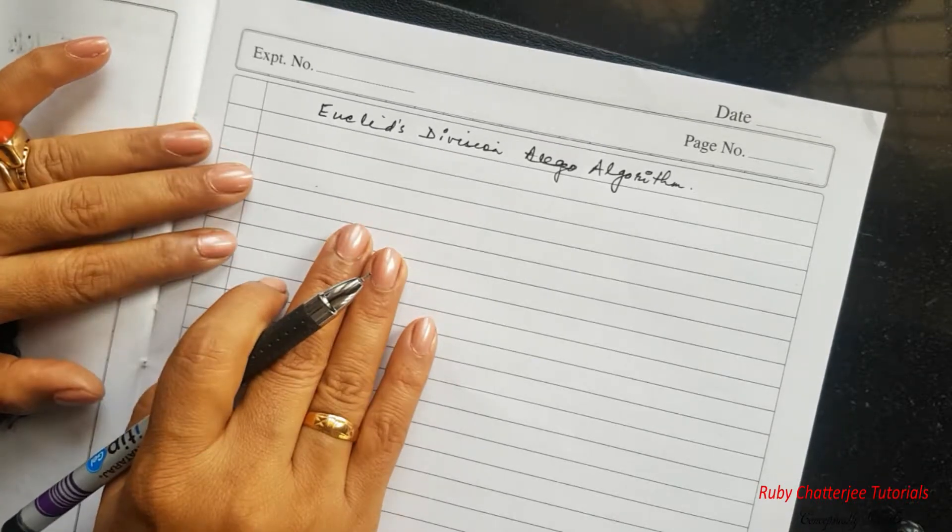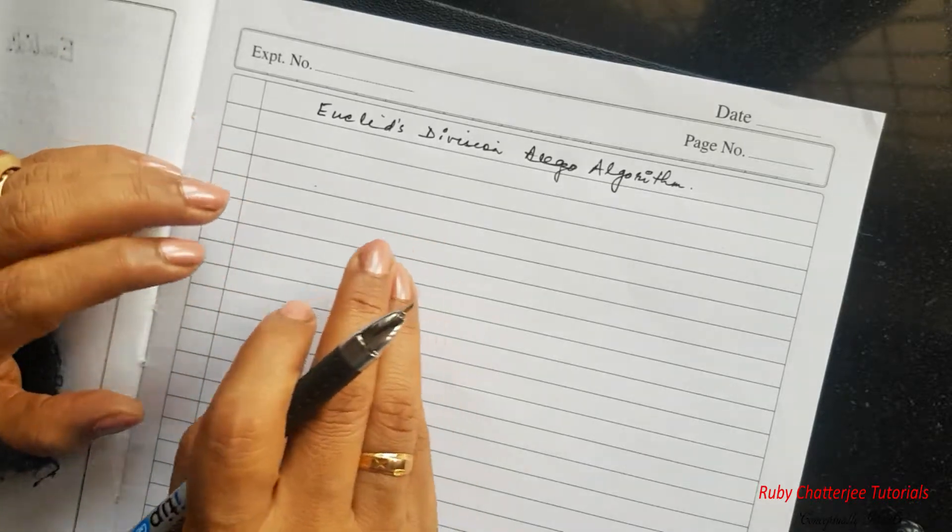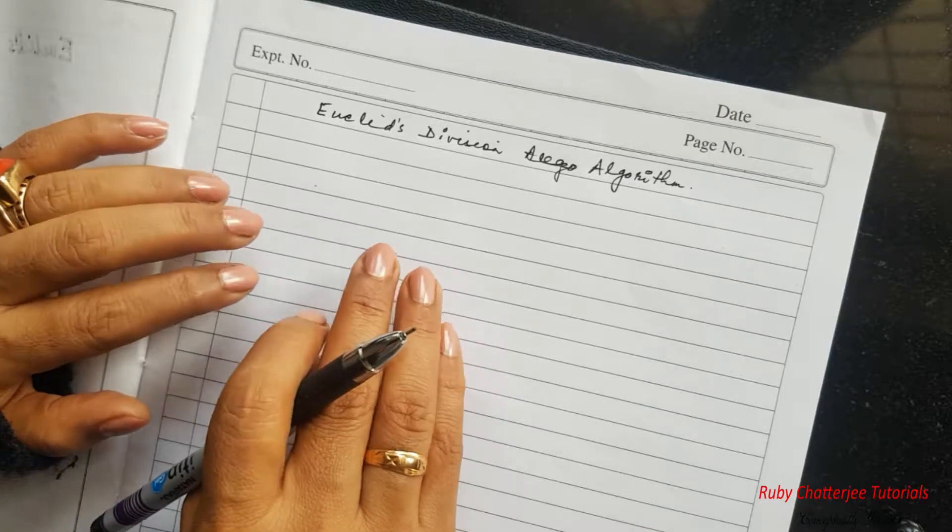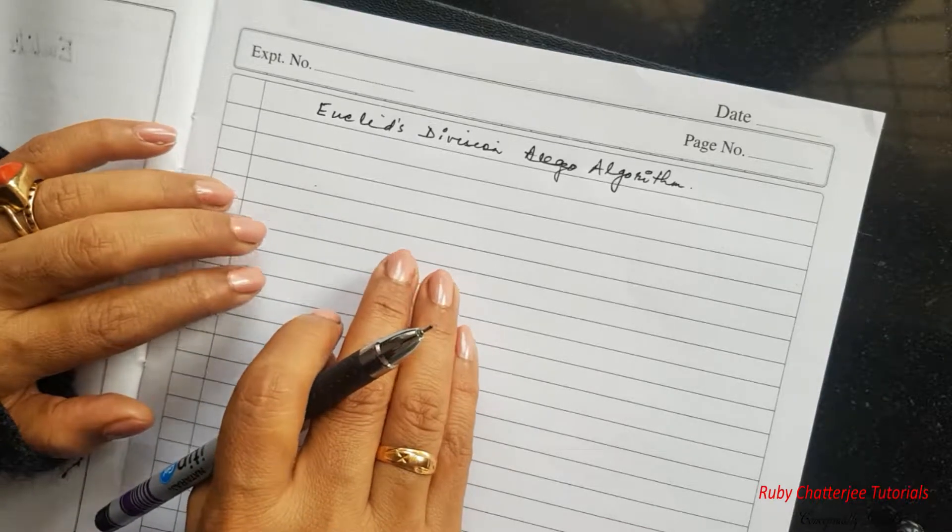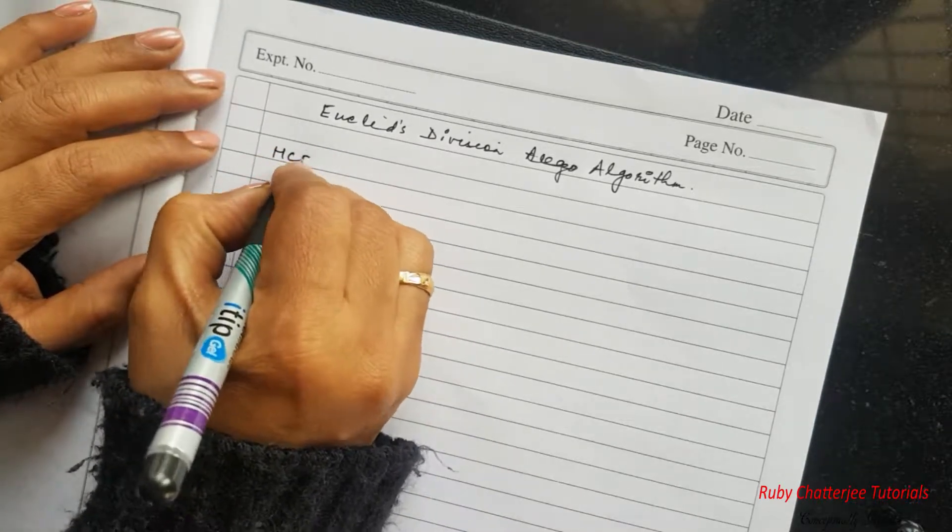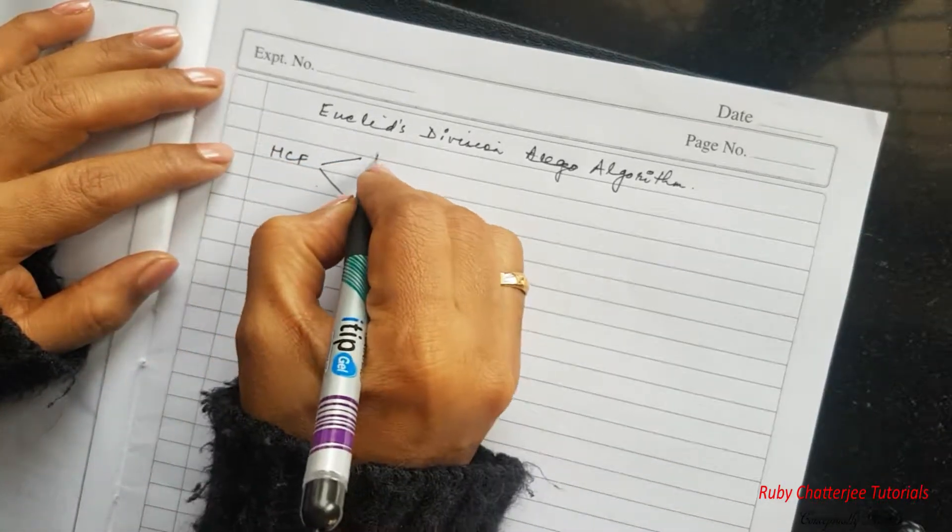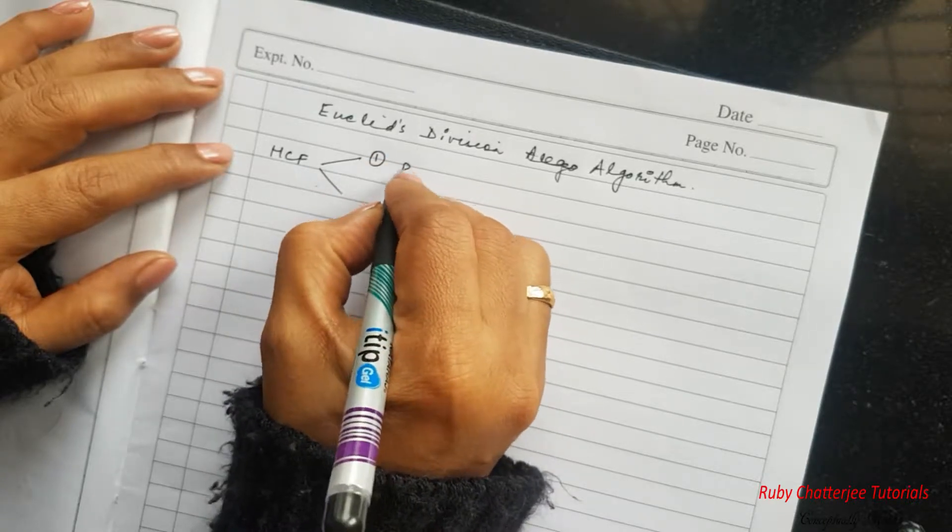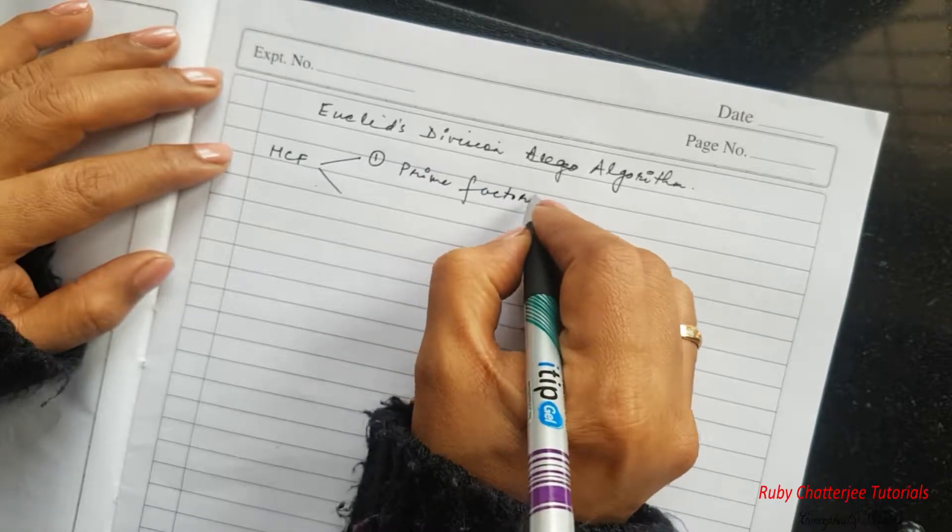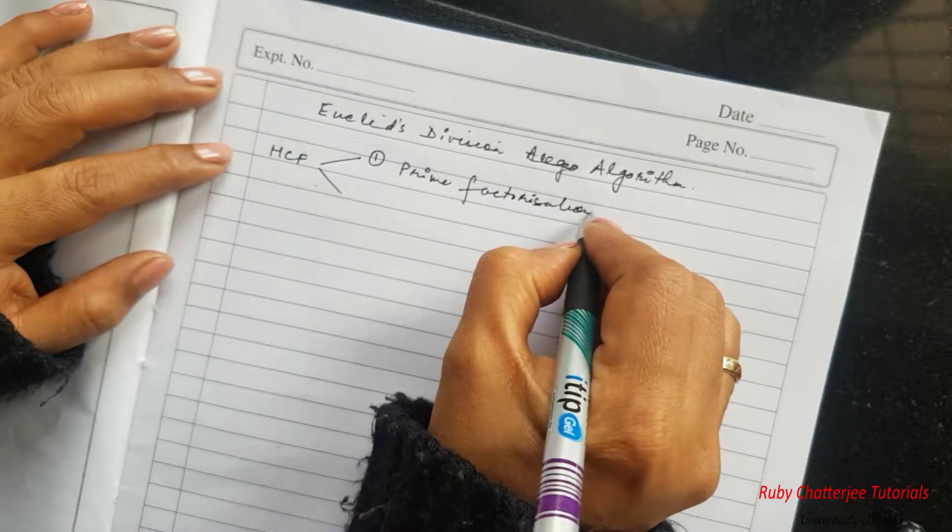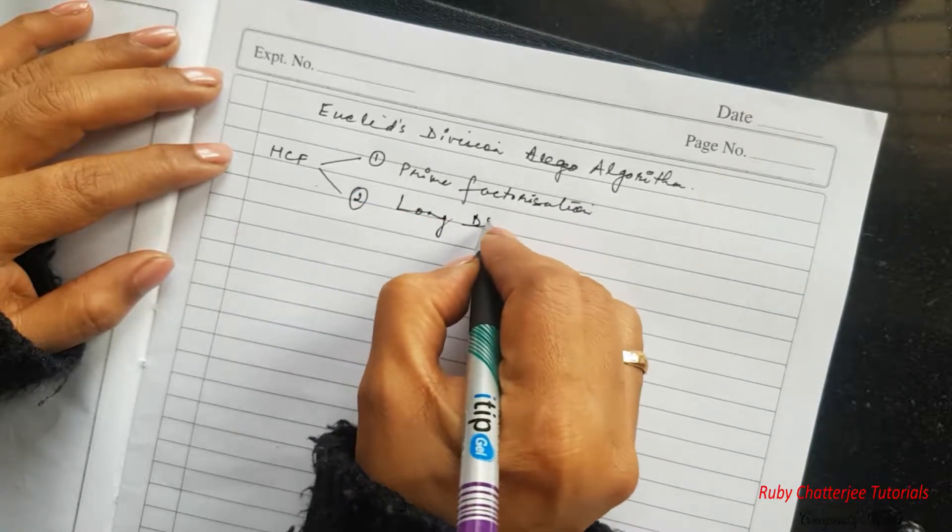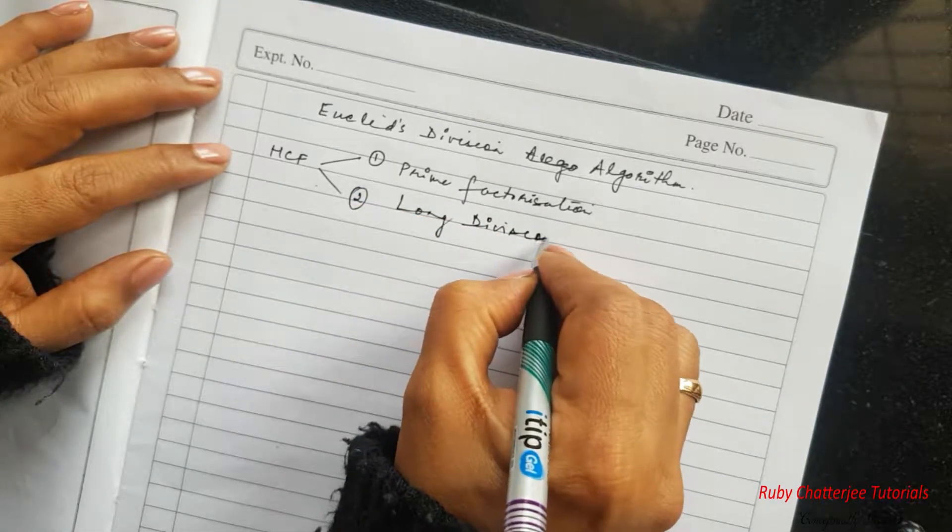Now if you remember in your younger days, probably when you were in class 5th, 6th, 7th, you found out the HCF of any two given numbers basically by two methods. The first method was prime factorization and the second method was long division method.